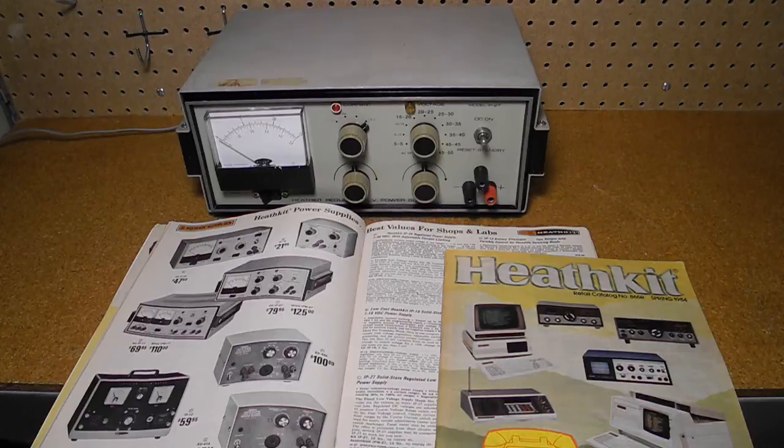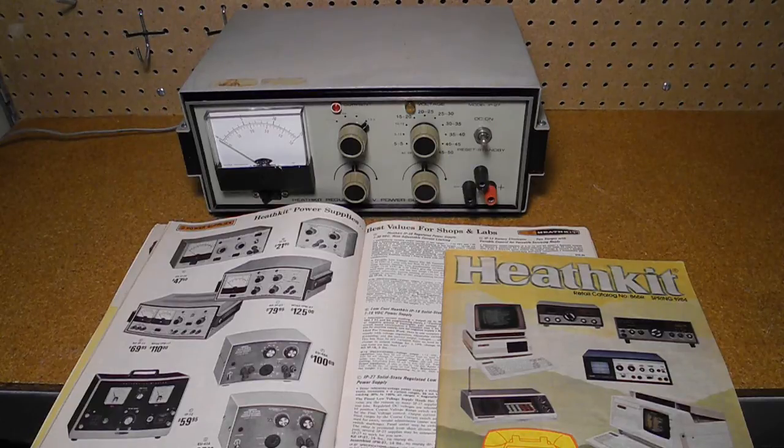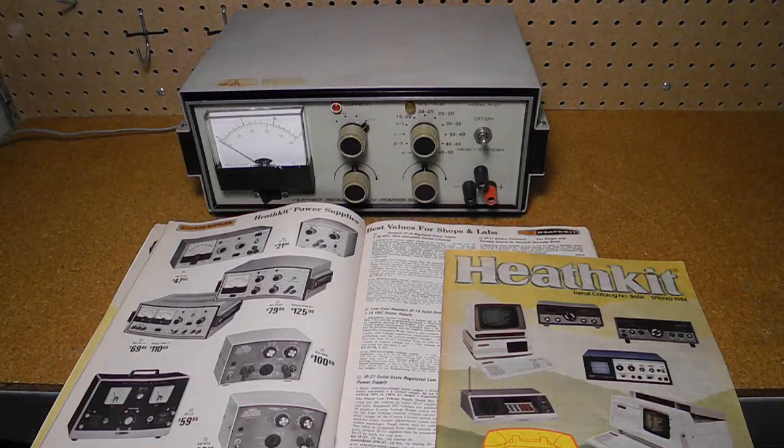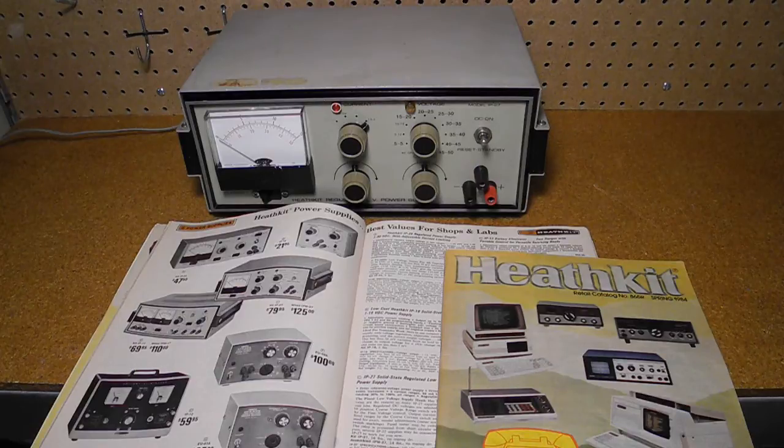Heathkit was a manufacturer of electronics in kit form. Their product line included amateur radio, test equipment and various consumer products. By building a piece of electronics you could save money and gain the satisfaction of having assembled it yourself.